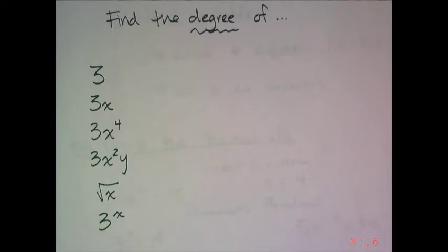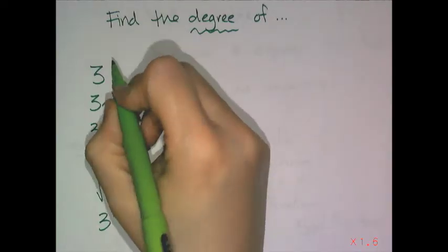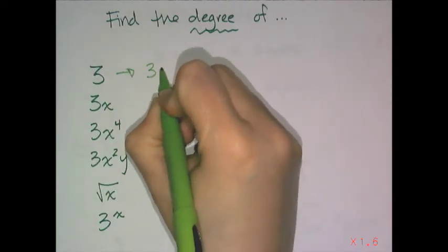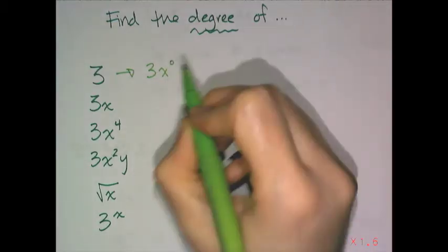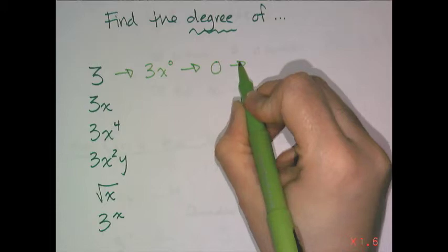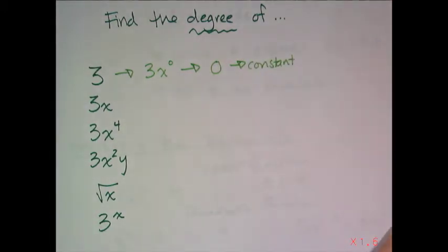In this set of examples, we want to find the degree of each of these terms. Remember the degree is the exponent on the variable. If I look at 3, 3 is really 3 times x to the 0 power, so the degree is 0. This is true for all constant terms - if it's missing a variable, its degree is 0.